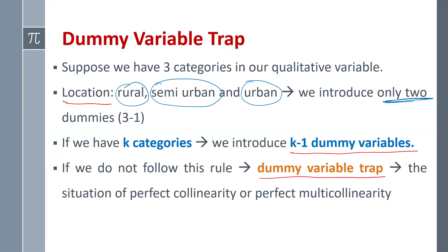So what is the dummy variable trap? It occurs when you have k categories and you introduce k dummy variables instead of the correct k minus 1 dummy variables.